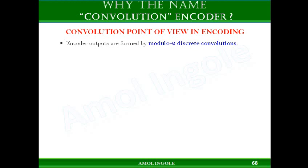The encoder outputs of the convolution encoder are formed by modulo-2 discrete convolution. This is the reason why the name 'convolution encoder' is given — because the outputs of the encoder are formed by modulo-2 discrete convolutions.